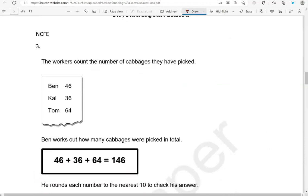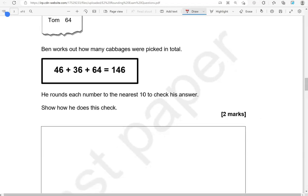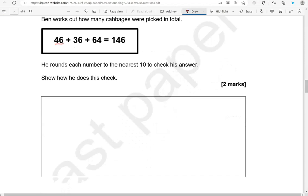The workers count the number of cabbages they have picked. Ben 46, Kai 36, Tom 64. Ben works out how many cabbages were picked in total: 46 add 36 add 64 equals 146. He rounds each number to the nearest 10 to check his answer. Show how he does this check. So 46 is in between 40 and 50. If it's 5, 6, 7, 8 or 9, we round up. So we go to 50. 46 is closer to 50 than it is to 40.